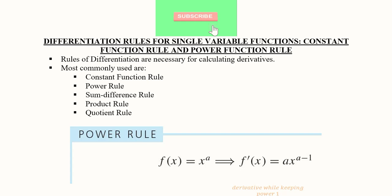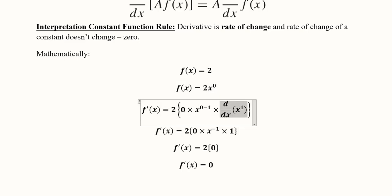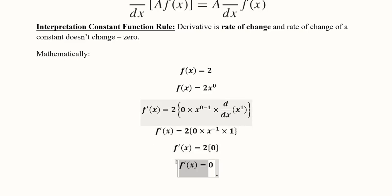Here is the proof of why the constant function rule gives zero. Assume the constant is 2. We can write 2 as 2·x raised to the power 0, introducing the variable with a zero power. Applying the power rule: the power 0 comes first, one is deducted giving power minus one, and the derivative of x with power one equals one. The factor of 0 multiplies everything, making the result zero. This proves the constant function rule using the power rule.